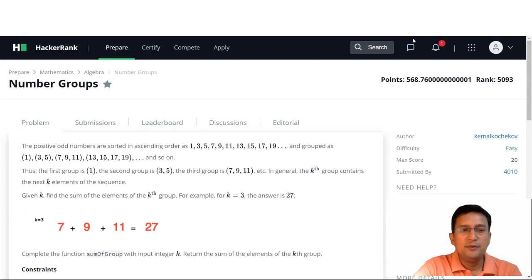The positive odd numbers are sorted in ascending order as 1, 3, 5, 7, and so on, and grouped as: one, then three and five, then seven, nine, eleven, then thirteen, fifteen, seventeen, nineteen, and so on.